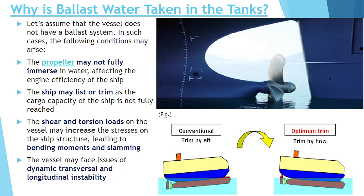If we don't take ballast in the ship, the shear load and torsion load will increase, ultimately leading to bending moment and slamming effect on the ship. Moreover, the vessel may face dynamic transversal and longitudinal instability. So ballast water is taken because of these four reasons.